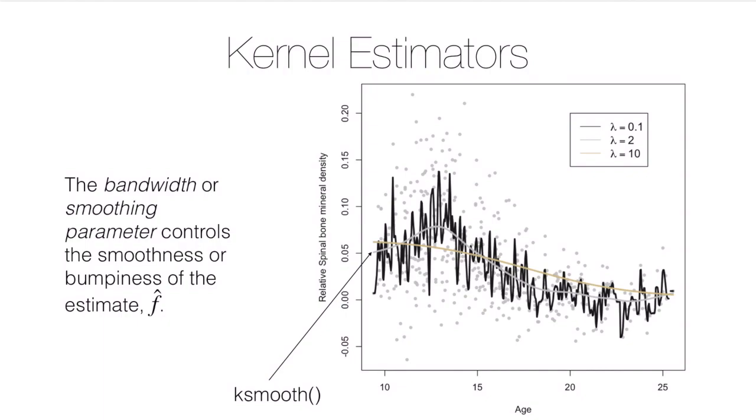The bandwidth controls the smoothness of the fitted curve. Some things to note about lambda in general: smaller lambda values will give bumpier fits, and larger lambda values will give smoother fits. I have a plot here that shows a few different values for lambda. Each one of these I fit using a normal kernel. Notice the black curve is lambda equal to 0.1, the gray curve is lambda equal to 2, and the gold curve is lambda equal to 10.